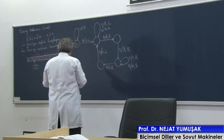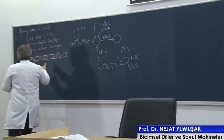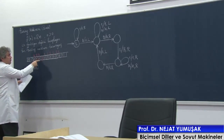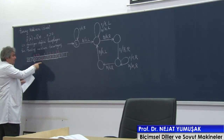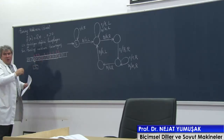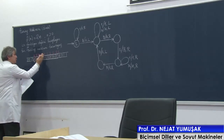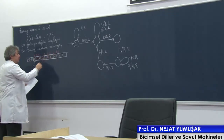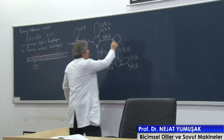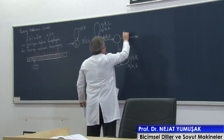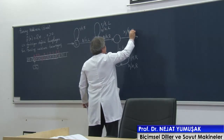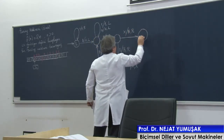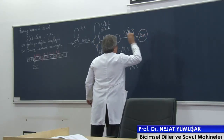X gördüğünde boşluk yaz — sola gitmeyelim. Onlar hep boşluk yaptık çünkü arkadaşlar. X gördüğüm zaman bunun yerine boşluk da yazabilirim, sağa hareket edebilirim. Burası hep boşluk olsun — burası benim sonucum olsun. X gördüğüm zaman, boşluk yaz ve sağ hareket et ve burada dur diyoruz.